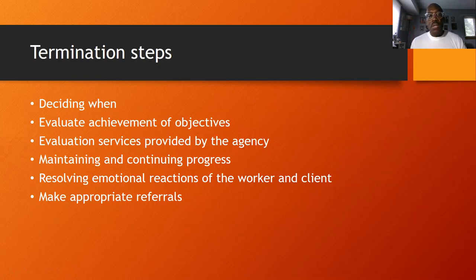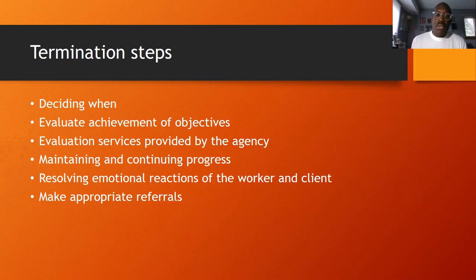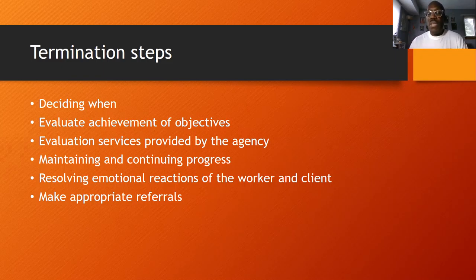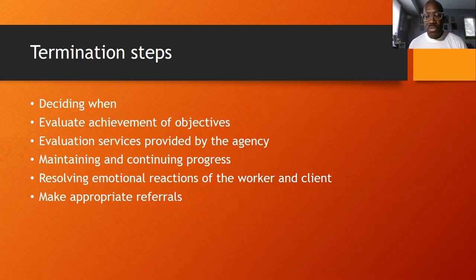The steps of termination include deciding when to end, evaluating the achievement of the objectives — how well did the client do in this particular area — and evaluation methods are sometimes provided by the agency. These are also used for maintaining and continuing progress. You also need to be aware that as a clinician and social worker, both you and your client may have an emotional reaction to the end of the relationship. You've gotten to know these folks and families over time, and a bond sometimes develops within that therapeutic, healthy relationship. Ending a relationship can be difficult, as well as ensuring appropriate referrals are made so clients continue to get services if there's still a need.